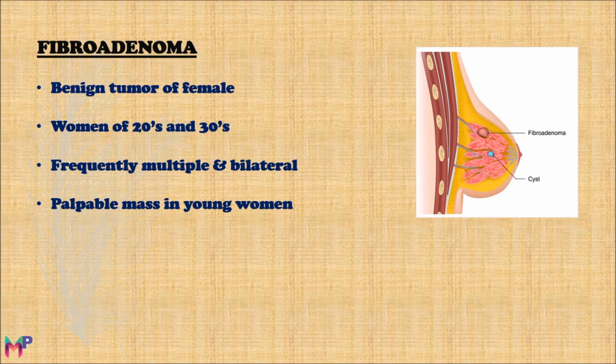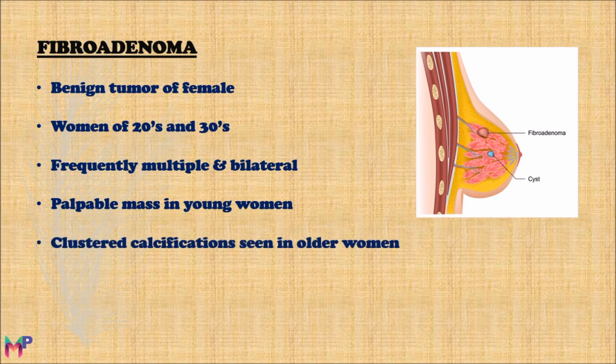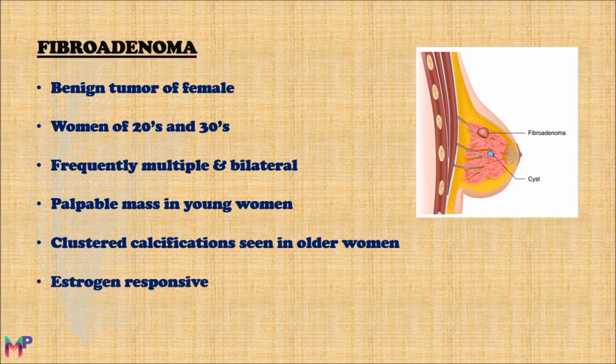This palpable nature is a differentiating feature of fibroadenoma from carcinoma. In older women, fibroadenoma may appear as clustered calcifications due to lower estrogen levels. Fibroadenoma is hormonally responsive — increased estrogen levels cause an increase in size, as seen during the menstrual cycle or due to lactational changes during pregnancy. After menopause, fibroadenoma may regress or calcify.